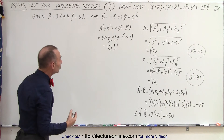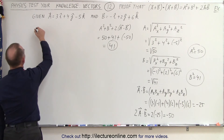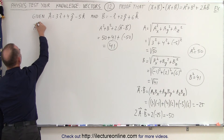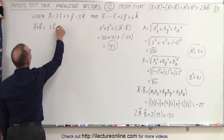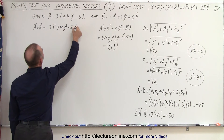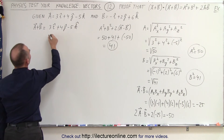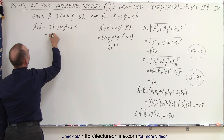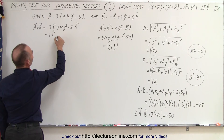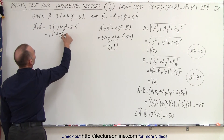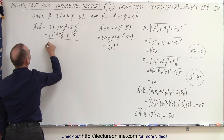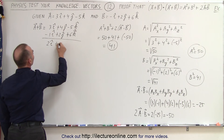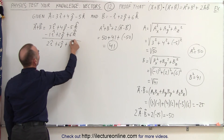Now let's sum the two vectors together. A plus B equals 3 in the I direction plus 4 in the J direction minus 5 in the K direction, added to negative 1 in the I direction plus 2J plus 6K. When we add the two together, we get 2 in the I direction, plus 6 in the J direction, plus 1 in the K direction.